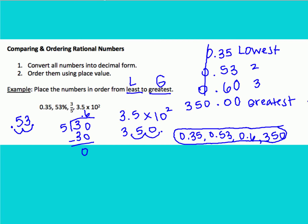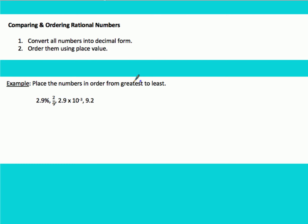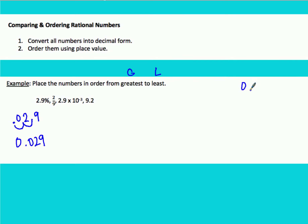Go ahead and try the next example on your own. It says place the numbers in order from greatest to least — pay attention, that's the opposite order. Your steps are still the same: convert to decimal form, then order by place value. Our first number is 2.9%; moving the decimal two spaces to the left gives us 0.029.